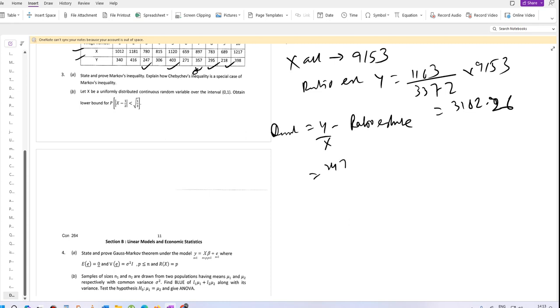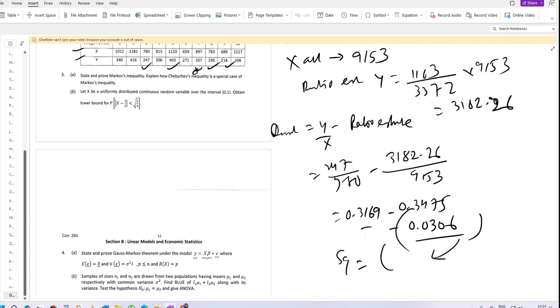For village 3, the deviation is 247 divided by 780 minus 3182.926 divided by 9153, which equals minus 0.0306. The square deviation is 0.0009.